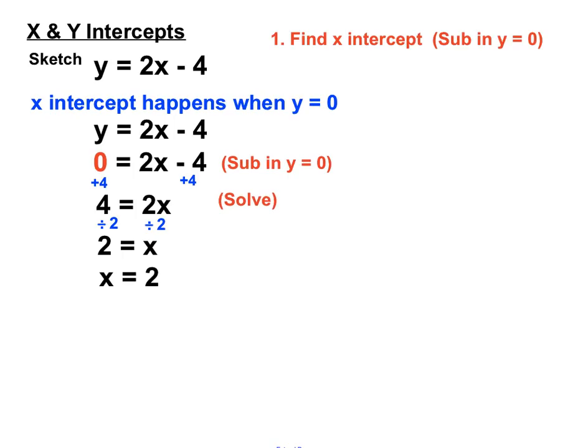Leaving us with X = 4 divided by 2, or 2, so X = 2. So we subbed in y = 0 to find the X intercept, and we've discovered that the X intercept is 2. Okay, we'll keep that up in our sleeve for later when we want to sketch this line y = 2x - 4 on the number plane.